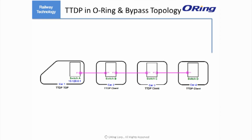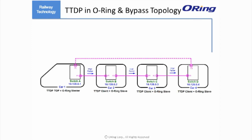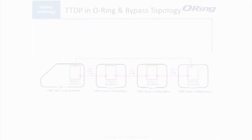While TDDP has no problem working in daisy-chain topology, some configurations must be made when it is running in ring and bypass structures, otherwise errors may occur. In daisy-chain topology with TDDP enabled, the head train switch will assign a new IP address to the switches in adjacent carriages sequentially when train carriages are rearranged.